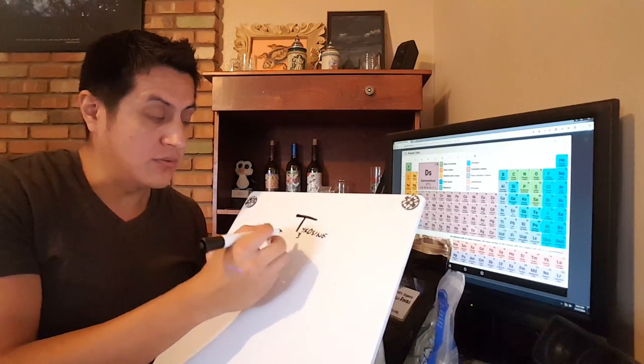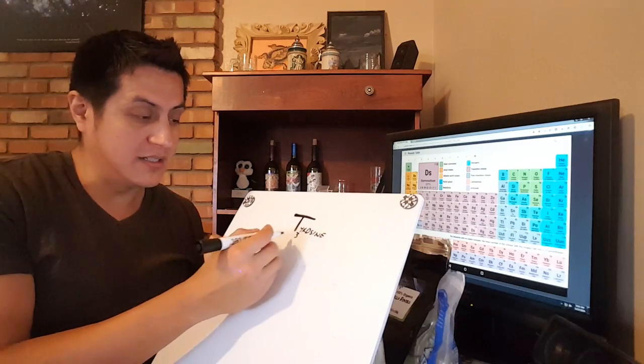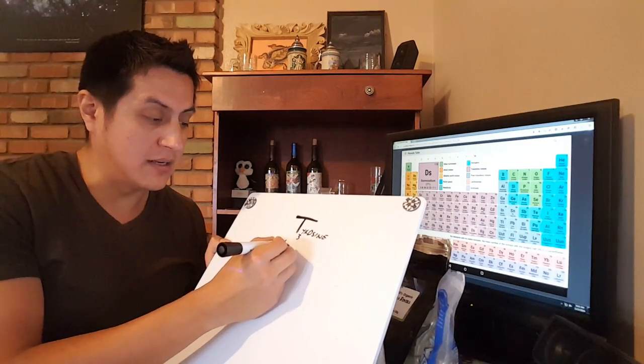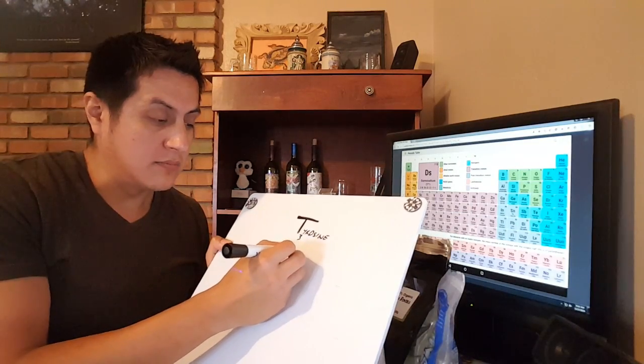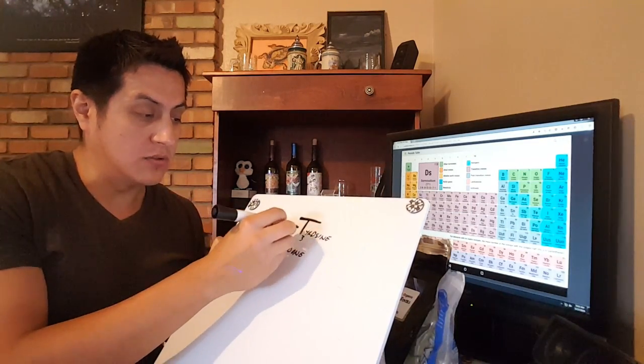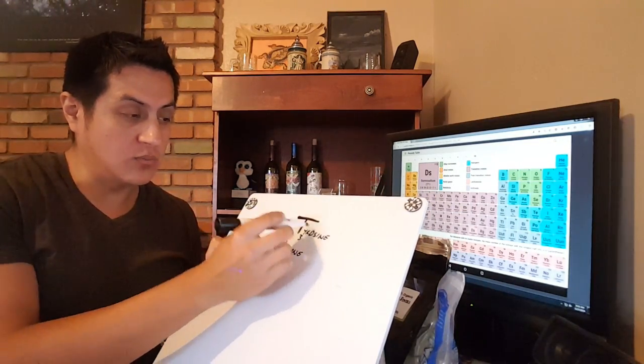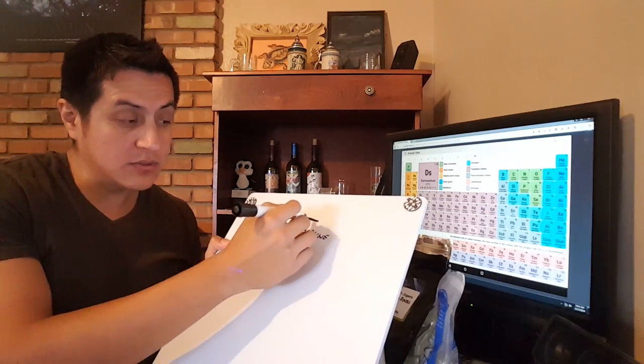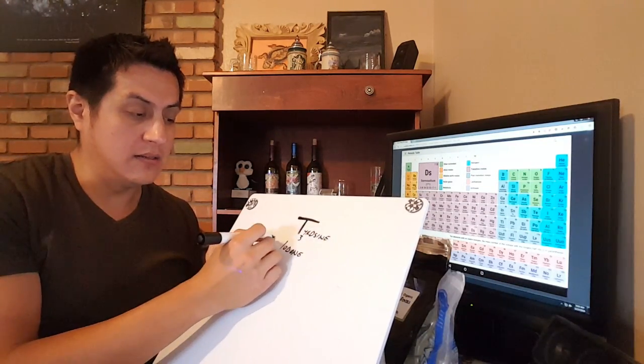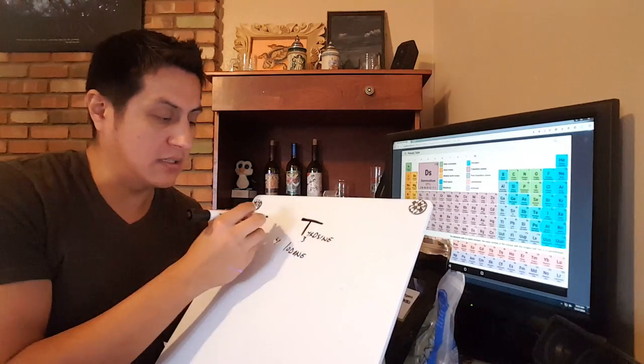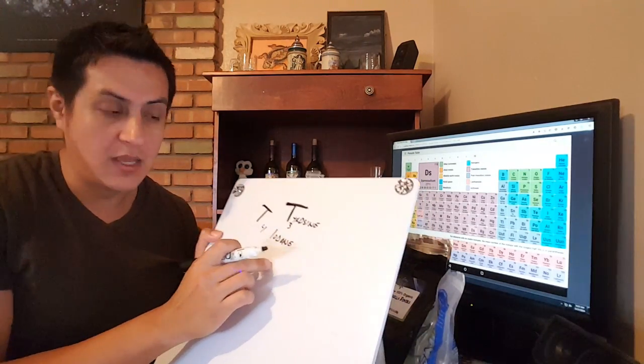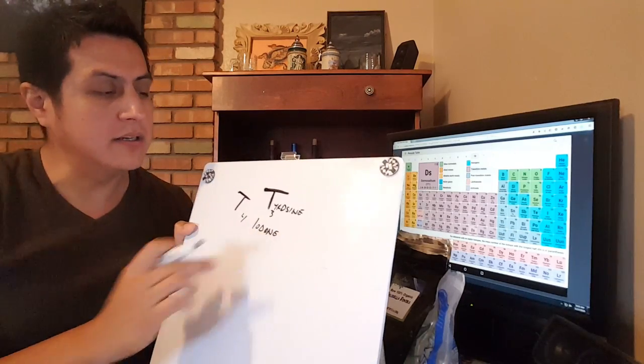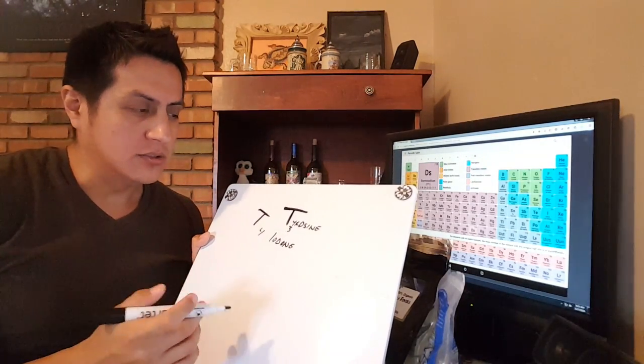When you see T3, for example, it's one tyrosine and three iodine or iodide molecules. You can have T3 - one tyrosine and three iodine - or T4 - one tyrosine and four iodine. That's basically all the difference between T3 and T4 is: how many molecules of iodine there are. What I started to learn is, I have here the periodic table...